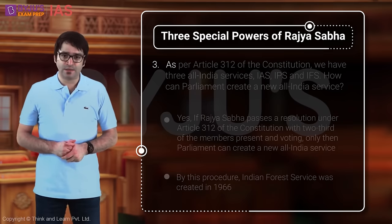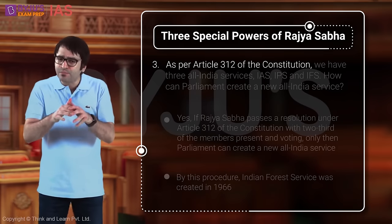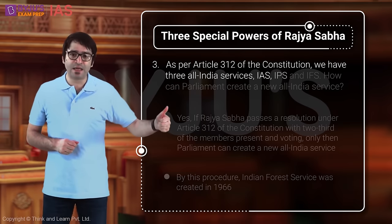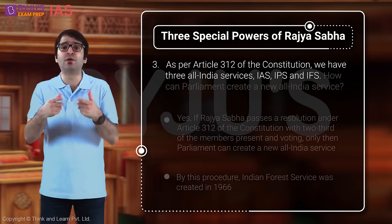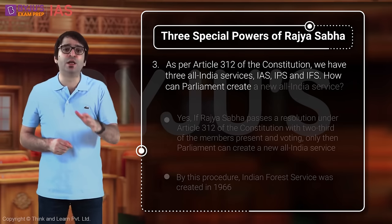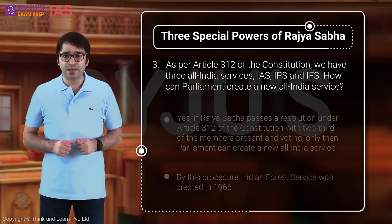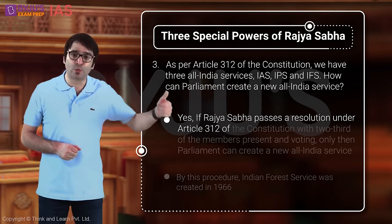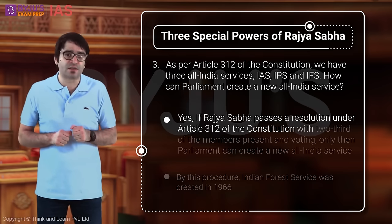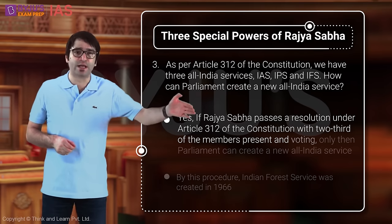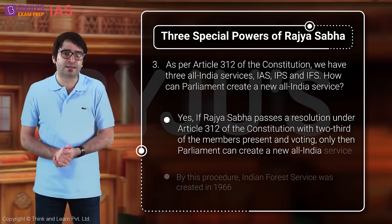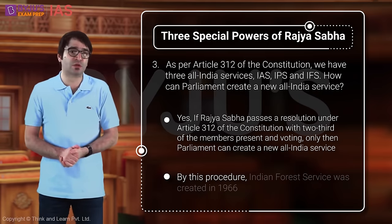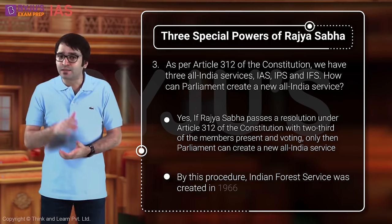Power Number 3: Article 312 of the Constitution. We currently have three All India Services — IAS, IPS, and Indian Forest Service. A new All India Service can be created, but only by Parliament, and Parliament cannot initiate this action unless Rajya Sabha passes a resolution under Article 312 by two-thirds of the members present and voting. This procedure was used in 1966 when the Indian Forest Service was created as the third All India Service.